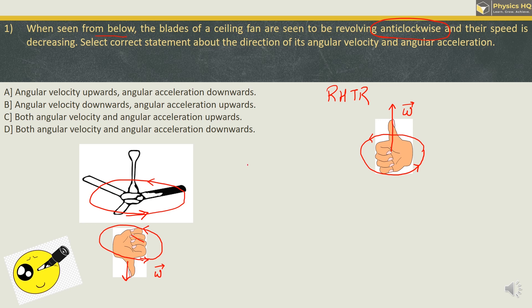Talking about angular acceleration alpha: if omega increases, alpha points in the same direction as omega. And if omega decreases, alpha points in a direction opposite to omega. In the question, speed is decreasing. Therefore, since omega is decreasing and pointing downwards, alpha will be pointing upwards. The correct option is option B: angular velocity downwards and angular acceleration upwards.